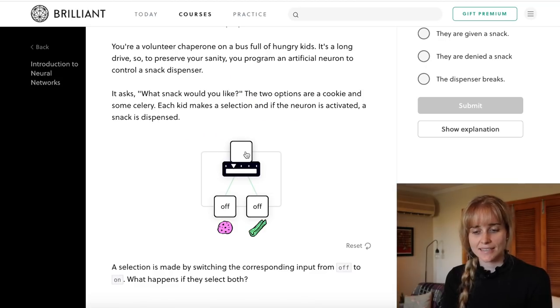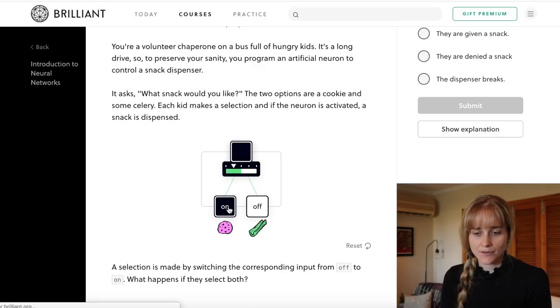In this next example we have a snack dispenser with cookies or celery, and if either the cookies or the celery or both are turned on in the input, the neuron will be fully activated.